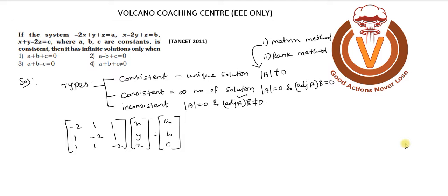Since det(A) equals zero and the condition is consistent with infinite solutions, what we need to find is the adjoint of A times B — that is, adjoint(A) into B must equal zero. The equation is Ax = B, so we need to find adjoint of A.